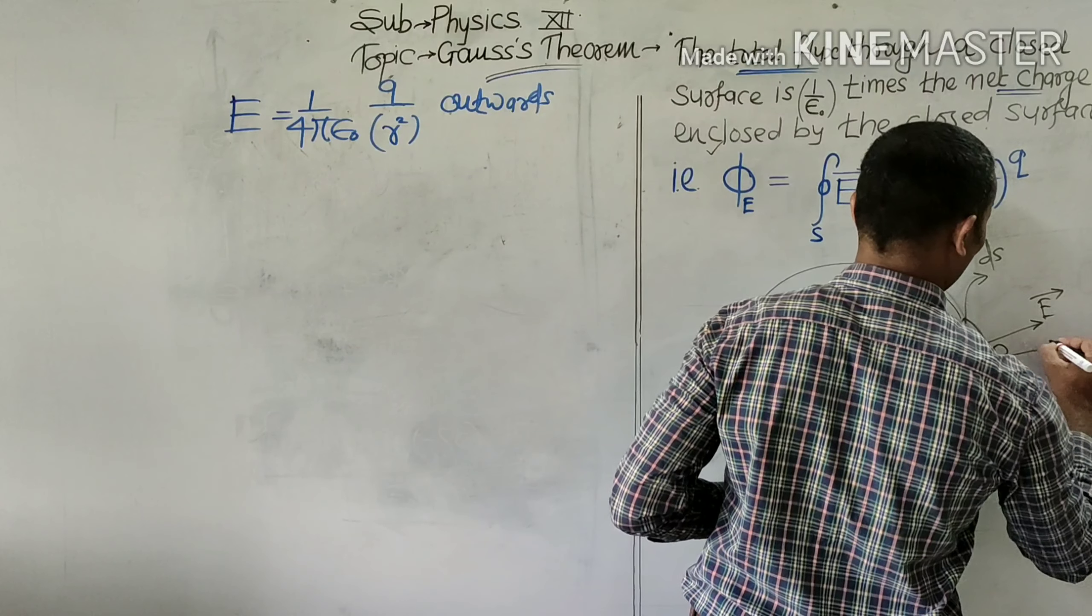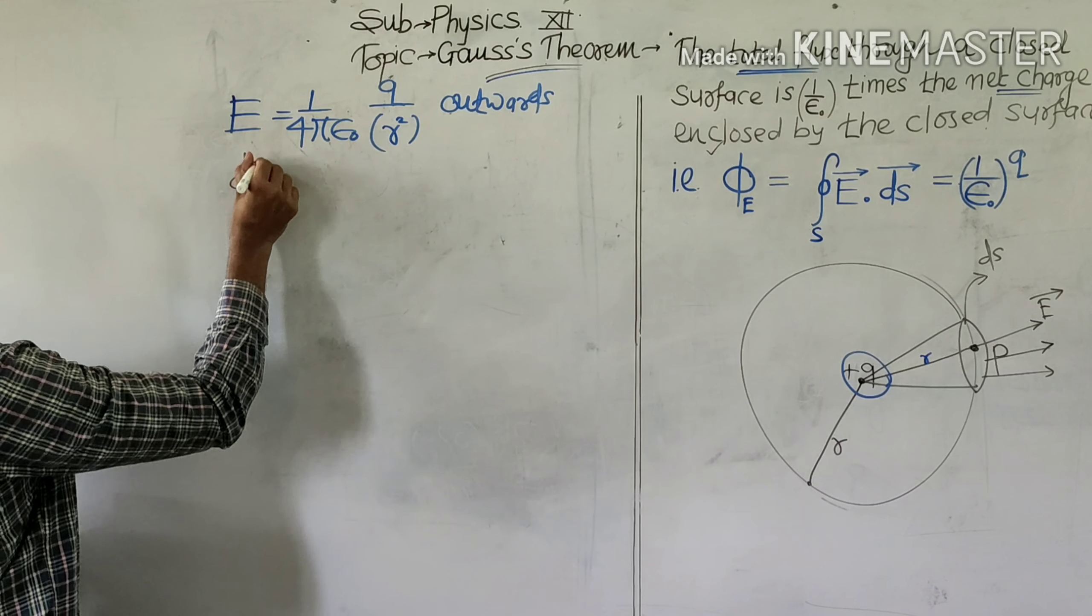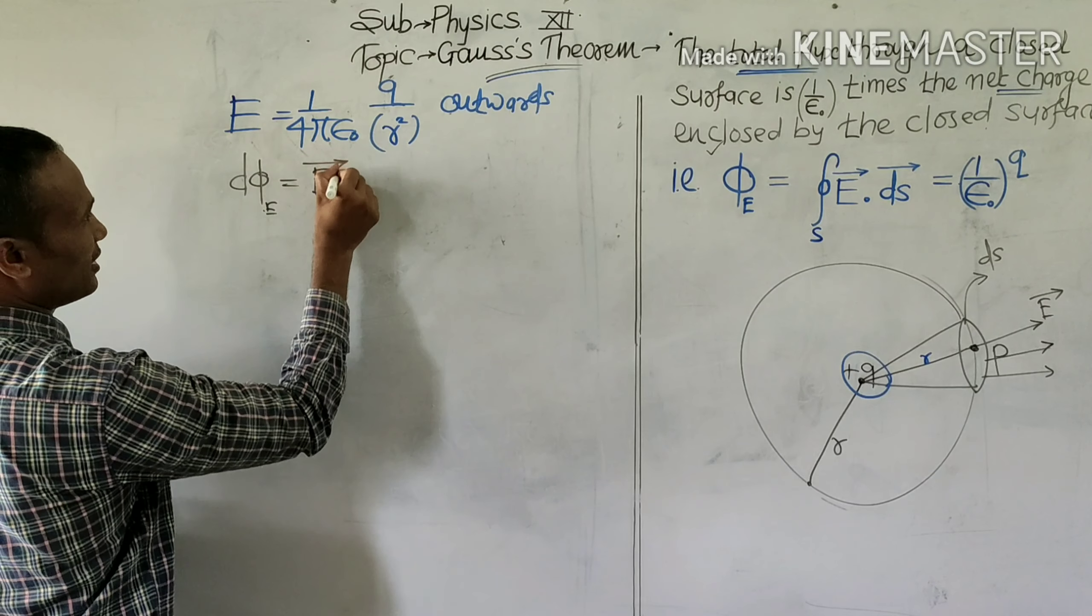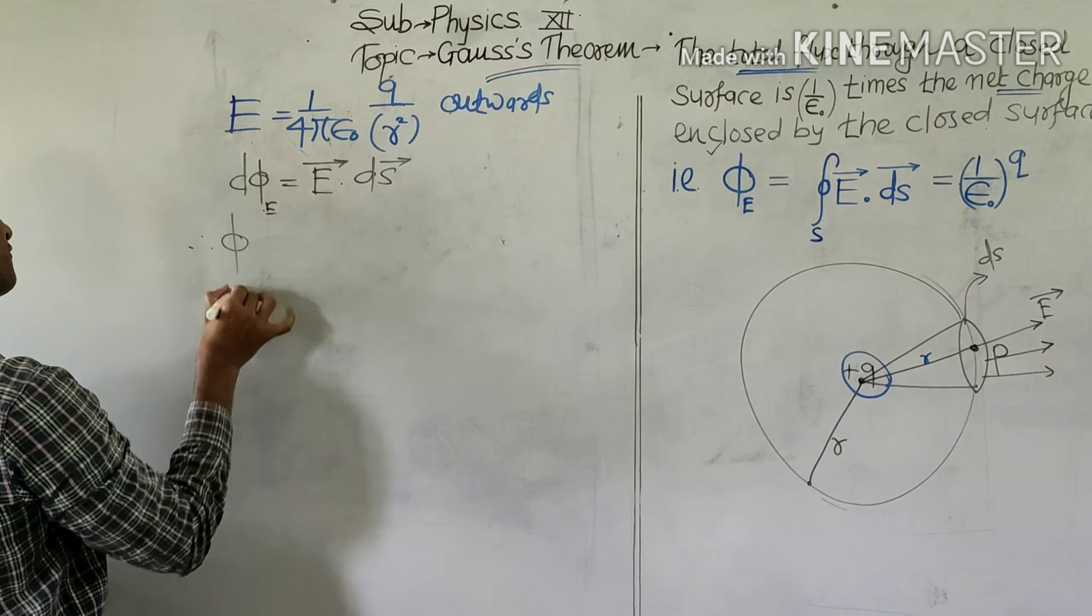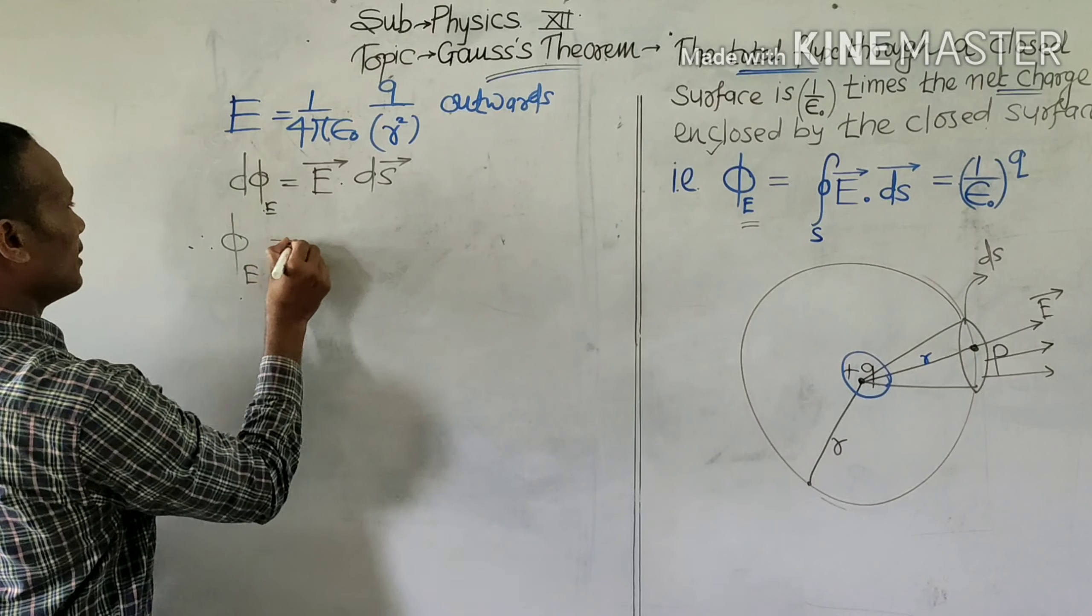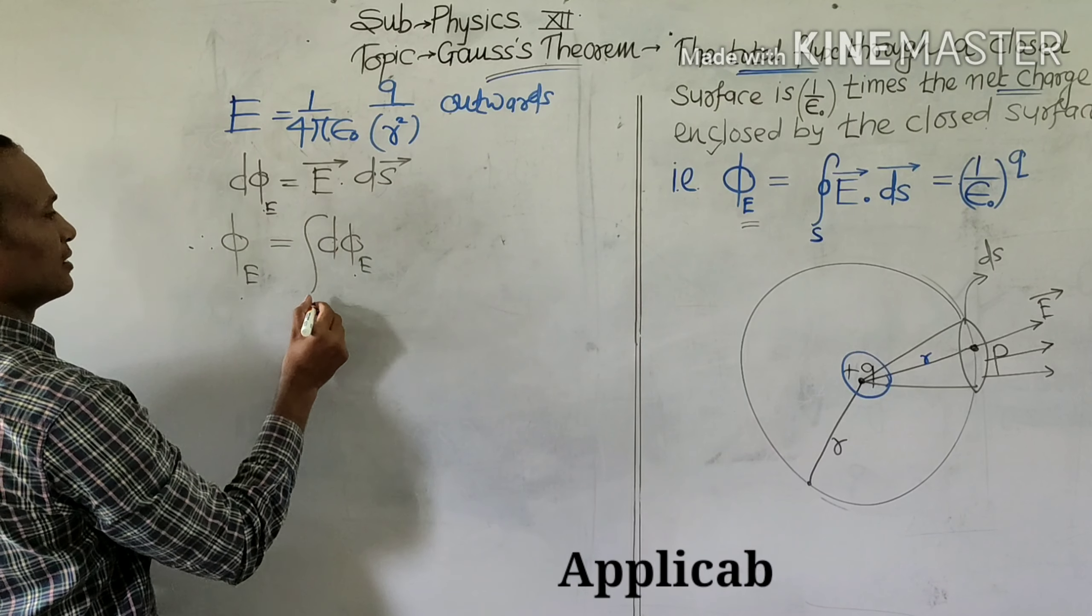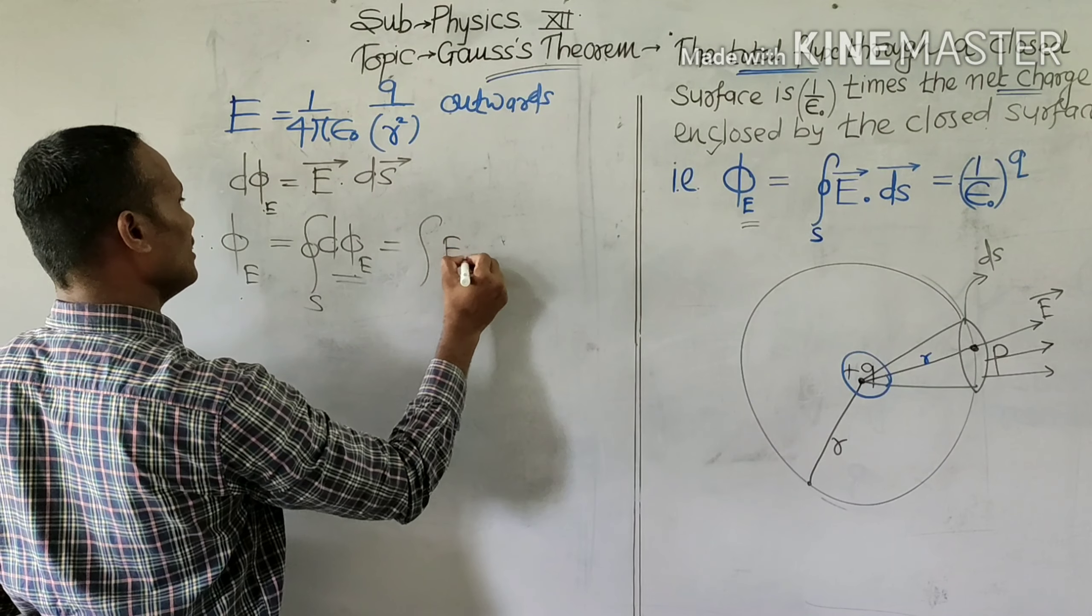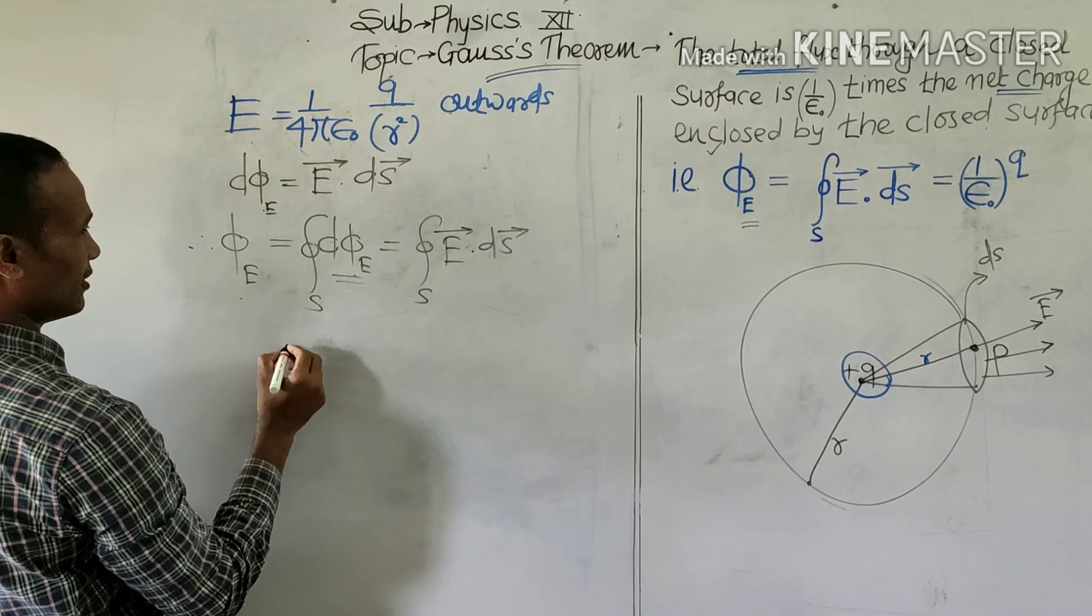Now, the total number of field lines passing through this small surface. The total flux passing through the small surface is, according to definition, electric field dot product of field and the surface area. Therefore, the flux passing through the surface will be obtained by integrating all this small flux over a closed surface. Therefore, replace the value of dΦ, that's E dot dS over the enclosed surface.